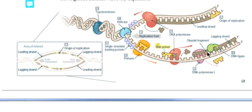The enzyme DNA ligase reseals the gap between the Okazaki fragments after removal of the RNA primer by DNA polymerase 1. DNA polymerase 1 first removes the RNA primer and then adds new nucleotides, and then the gaps between the nucleotides are resealed by the DNA ligase enzyme.